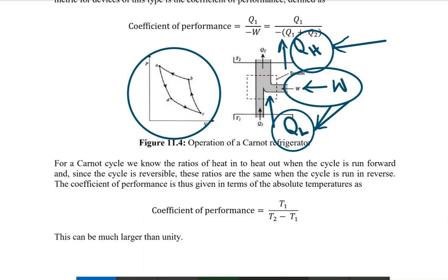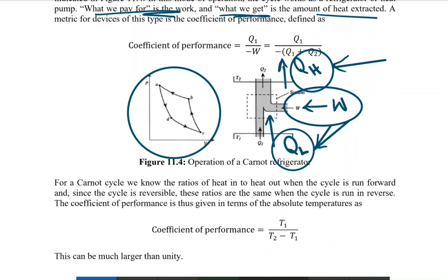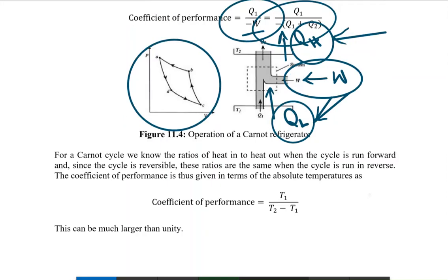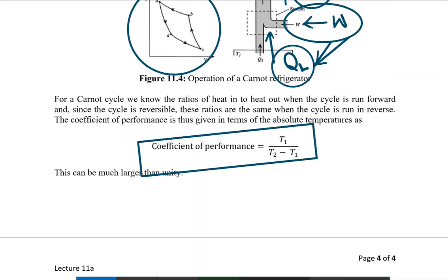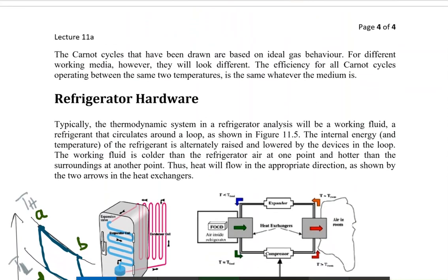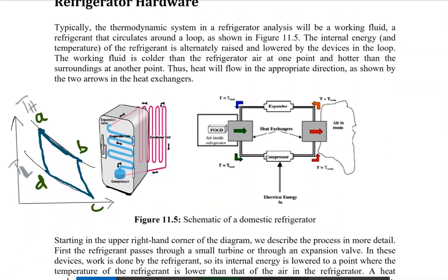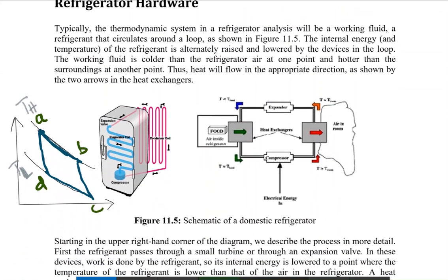We do not call the performance of a refrigerator 'efficiency' — we call it the coefficient of performance (COP). The coefficient of performance is the heat extracted divided by the work supplied. Using this equation, COP equals TL divided by (TH minus TL). Unlike efficiency, which cannot be 100%, the coefficient of performance is always greater than 1.